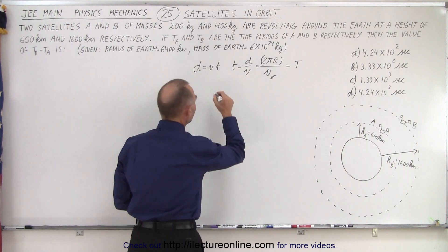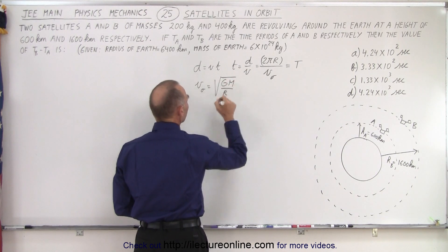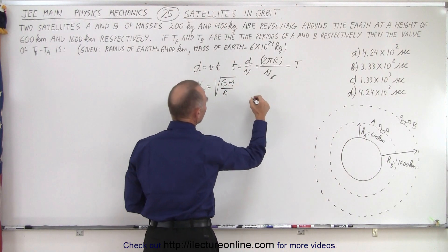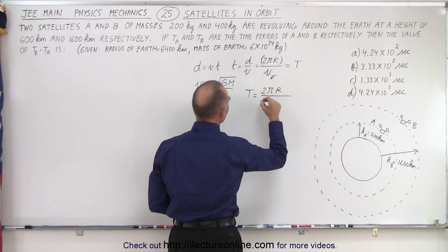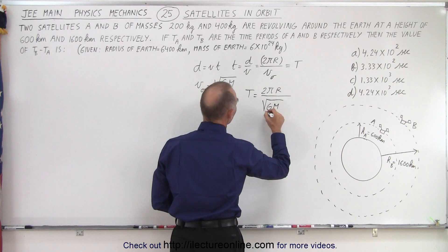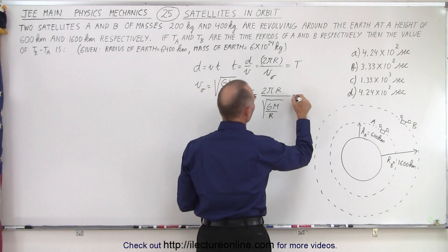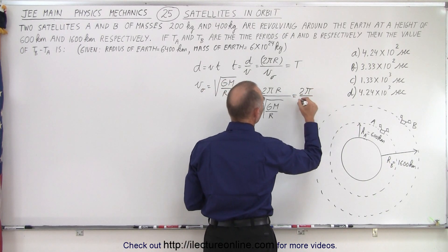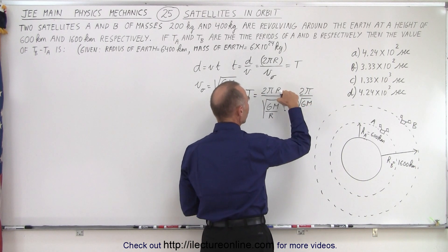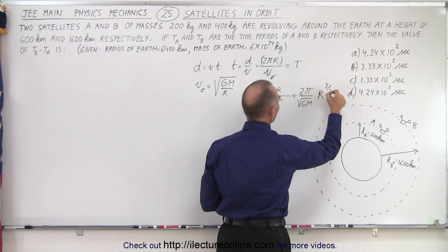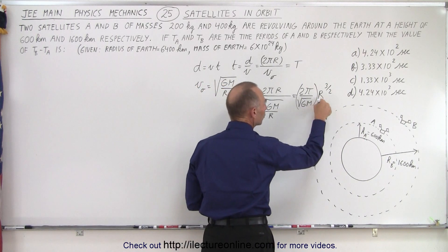We also need to know that the orbital velocity is equal to the square root of GM over r. If we plug that in, the period becomes 2πr divided by the square root of GM/r. Simplifying, this becomes 2π divided by the square root of GM, multiplied by r to the three-halves power. So the period is a constant times r to the three-halves power.